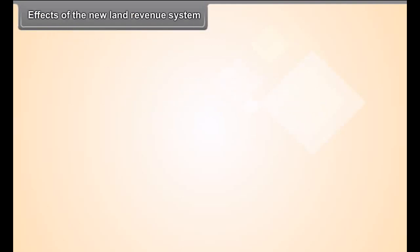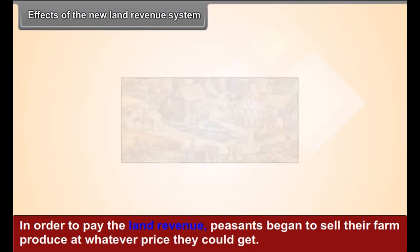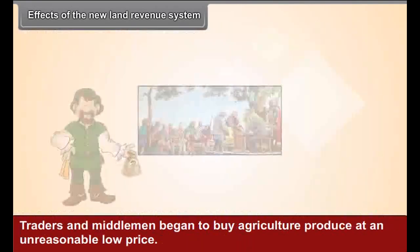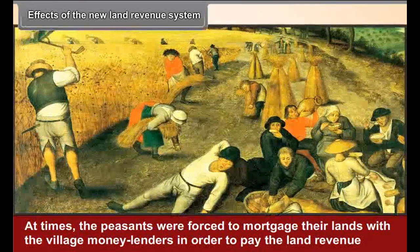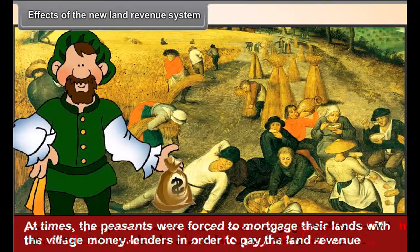Effects of the New Land Revenue System. The new land revenue system adversely affected the rural life in India. In order to pay the land revenue, peasants began to sell their farm produce at whatever price they could get. Traders and the middlemen began to buy agricultural produce at an unreasonably low price. At times, the peasants were forced to mortgage their lands with the village moneylenders in order to pay the land revenue.